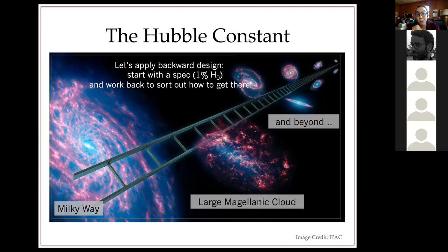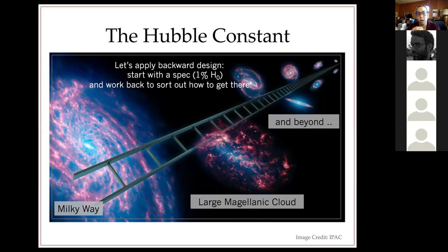That one percent specification means we'd like to measure the Hubble constant to one percent. A one percent measurement from the distance ladder is the practical limit: when cosmologists put that H₀ measurement as a prior on measuring other things — large-scale structure, CMB measurements — constraining H₀ to one percent actually lets you start to say interesting things about dark energy. There's both a philosophical and a practical reason we want to reach one percent H₀.